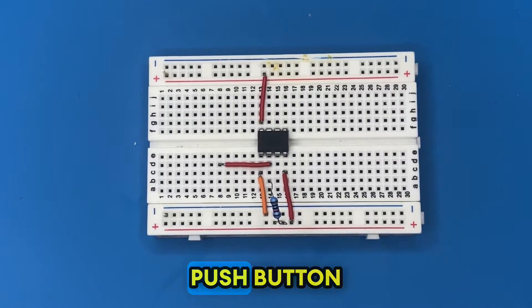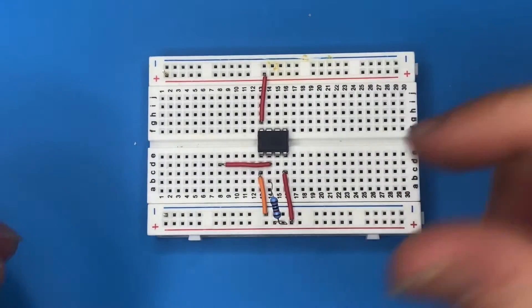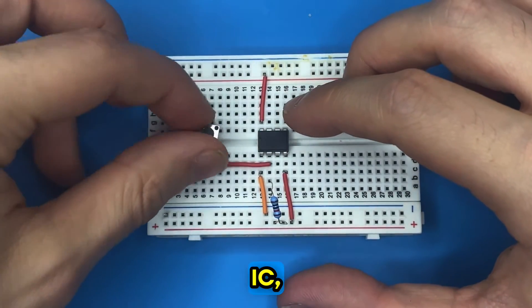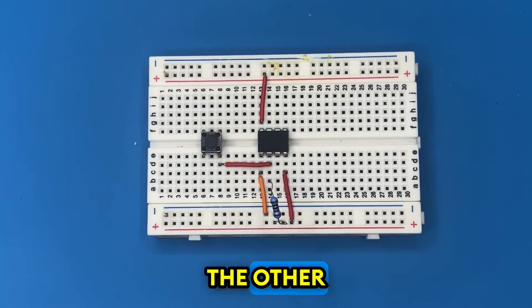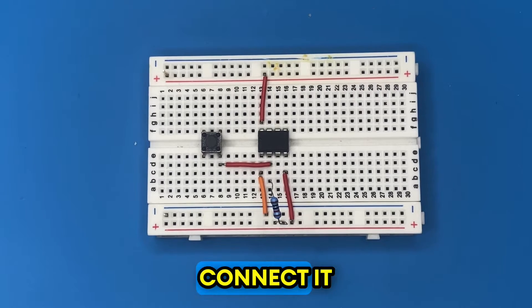Let's grab our push button switch and connect it to the second pin of the IC. The other side of the push button switch I'm going to connect to ground.